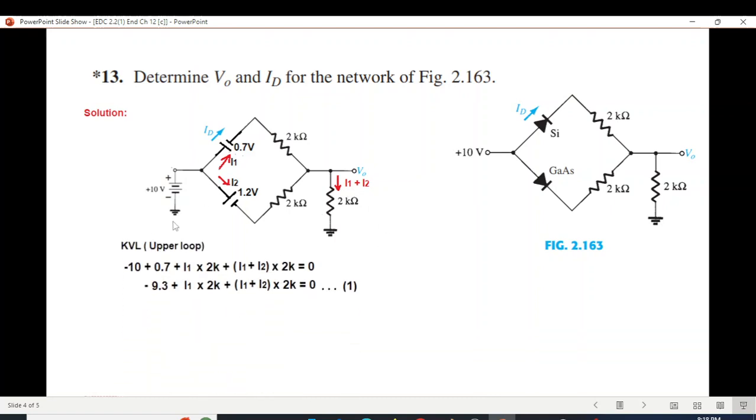So the upper loop we go from here and this way. This is the equation: minus 10, 0.7, I1 into 2k, and here it is I1 plus I2 into 2k. Simplifying we get equation number 1.